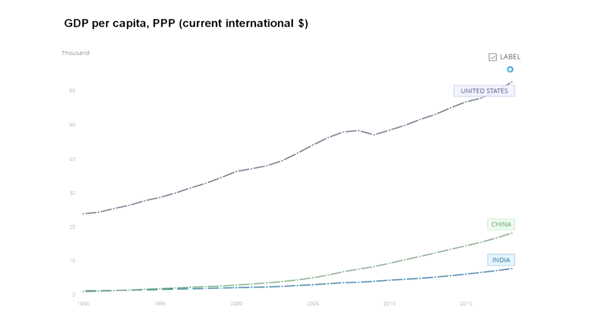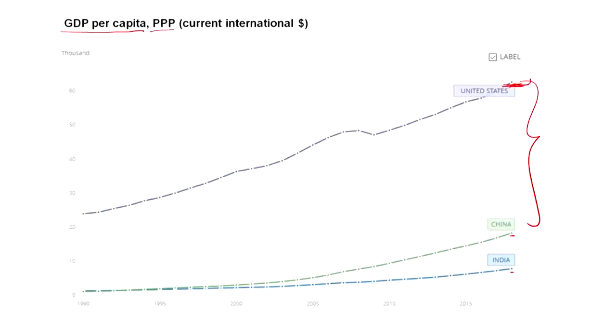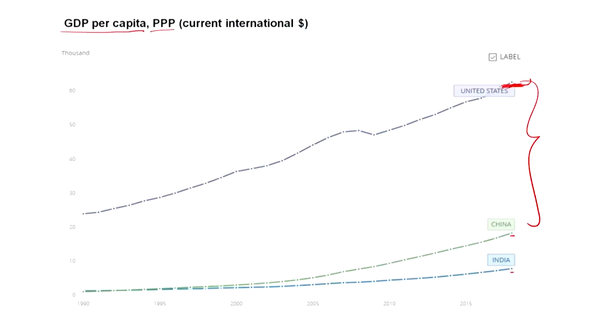If you look at purchasing power parity — what people can actually buy with their money — India is relatively better off, but China is still more than two times ahead. Bringing the US into the picture, Americans are remarkably well off in per capita terms, though there are considerable inequalities — 1% of the US population controls about 50–60% of the wealth. Given a chance, quite a few people emigrate chasing better material wealth and quality of life.